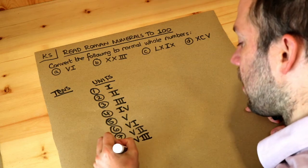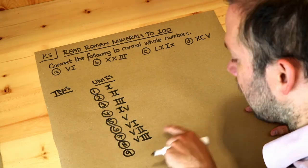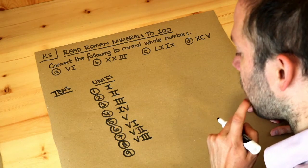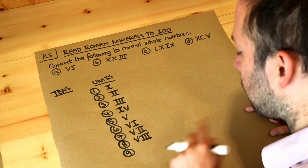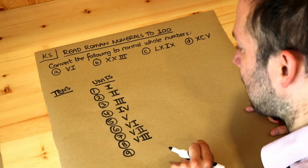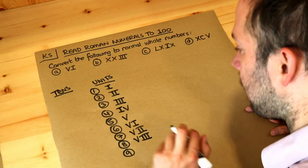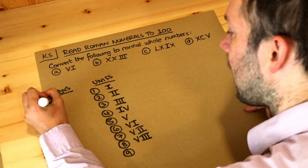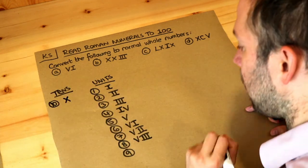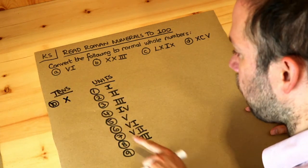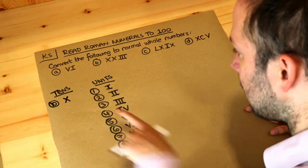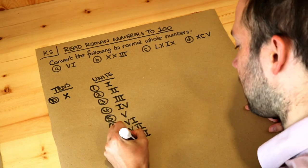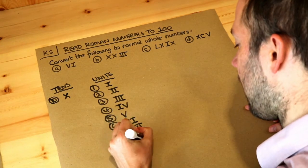And then nine. Again we don't have four i's to represent four, so actually we want to say one less than ten. Now ten is x in Roman numerals, so we want to say one less than x — that's going to be ix.